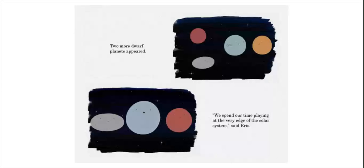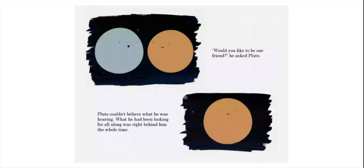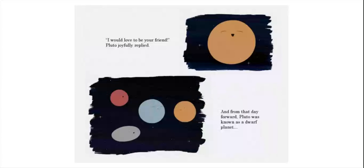Two more dwarf planets appeared. We spent our time playing at the very edge of the solar system, said Eris. Would you like to be our friend? He asked Pluto. Pluto couldn't believe what he was hearing. What he had been looking for all along was right behind him the whole time. I would love to be your friend, Pluto joyfully replied.